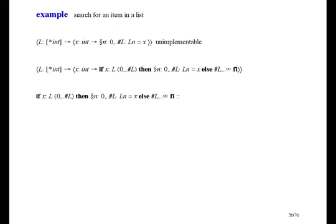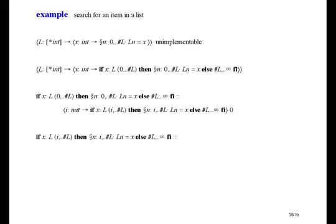Now we have to refine. First we introduce a new variable i, and the result of this function is the result of the search from position i onwards. We put i where the two zeros were and then apply the function to argument zero. If this were an imperative program we would say 'i gets zero'; as a functional programmer, parameter i gets argument zero. Now we have to refine the result of this new function. We can start with: if i equals the length of the list then the length is the result. I wrote the refinement symbol the first time but it was really an equality — this time it really is refinement, because we just chose one out of many possibilities for the result.